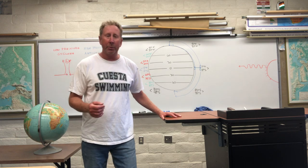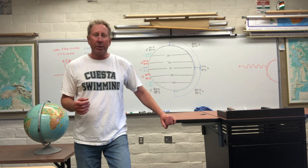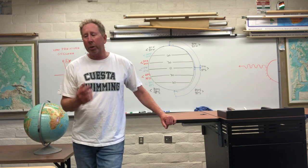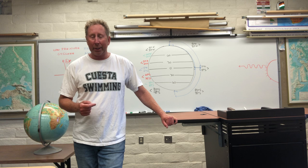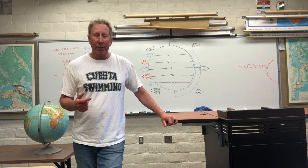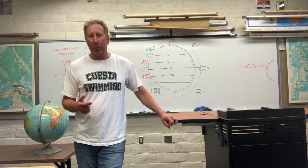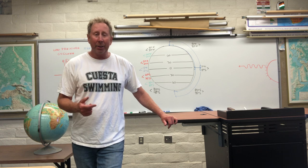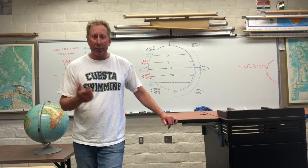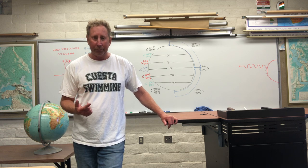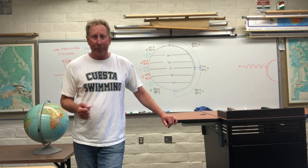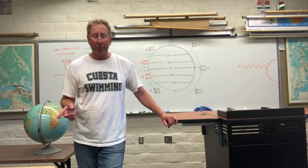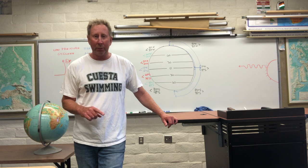Like many models, there are some assumptions built in. My first assumption is going to be that we are at equinox — that would be like March 22nd or September 22nd, when the sun is directly overhead at the equator. My second assumption is going to be that the earth is not rotating. When the earth is rotating, the Coriolis effect comes into play. It deflects winds to the right in the northern hemisphere and to the left in the southern hemisphere. So for now, no rotation.